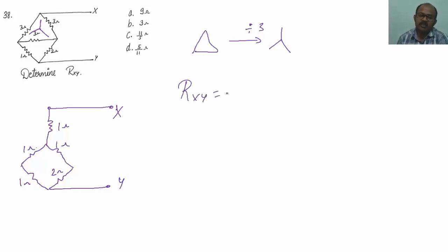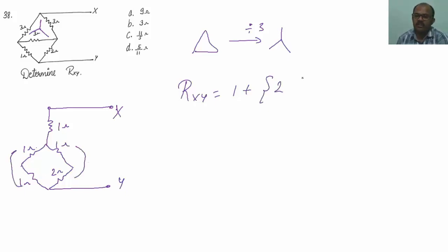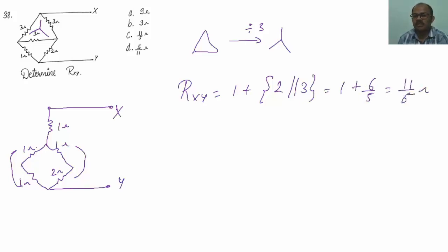Rxy equals 1 ohm in series with 2 ohms. The equivalent of 1 and 1 is 2, and the equivalent of 1 and 2 is 3. So 2 and 3 are in parallel, which equals 1 plus 6 divided by 5, which equals 11/5 ohms. Hence, option number C is correct.